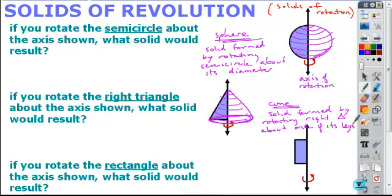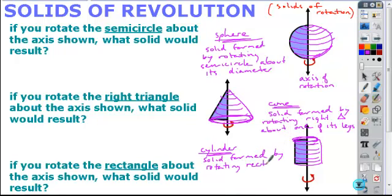And then finally, if you take a rectangle and you rotated about one of its sides, what solid shape is formed? So this is a cylinder. And this is formed by taking or rotating a rectangle about one of its sides.